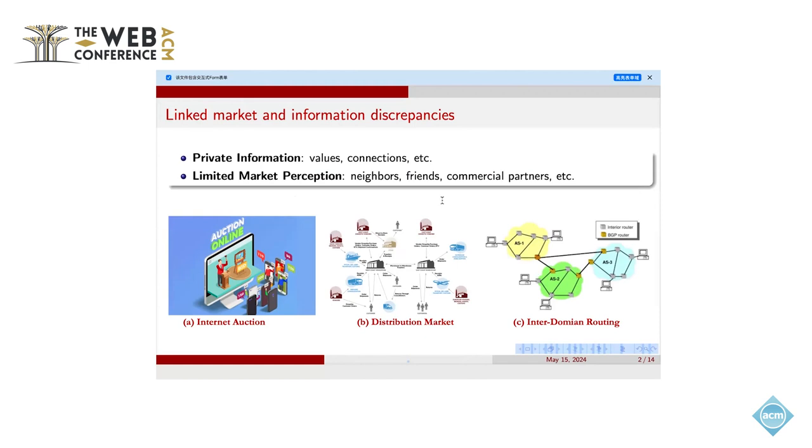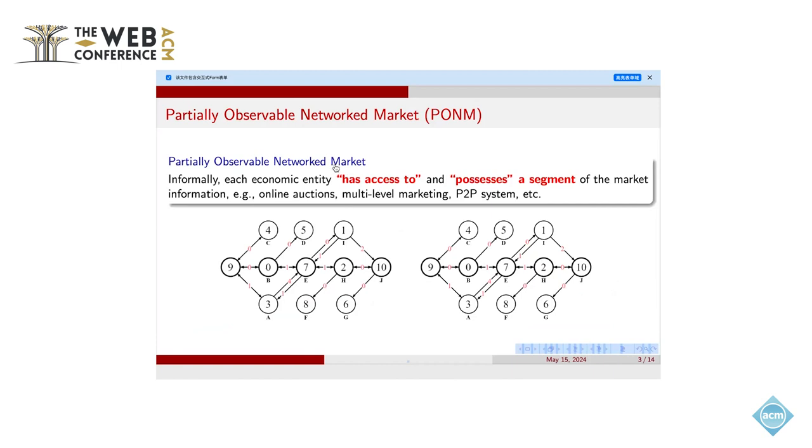That means the agent cannot know much about other agents' information, including their prices and their neighborhood. So we call this the partially observable network market.